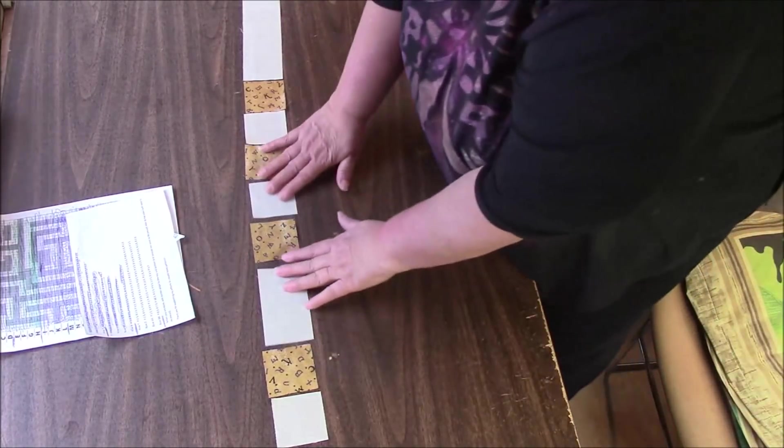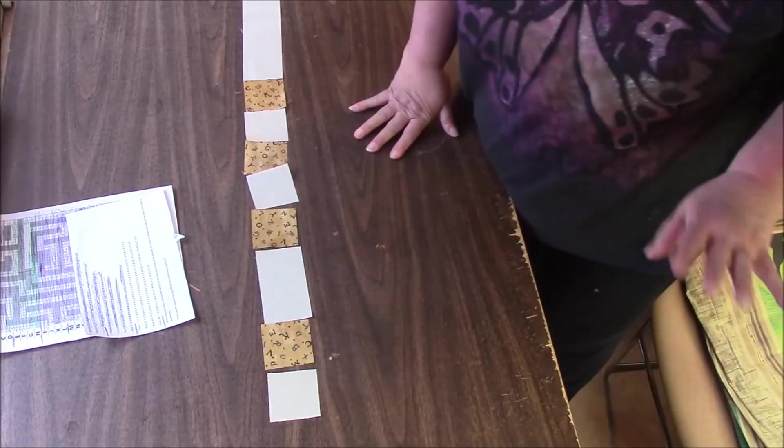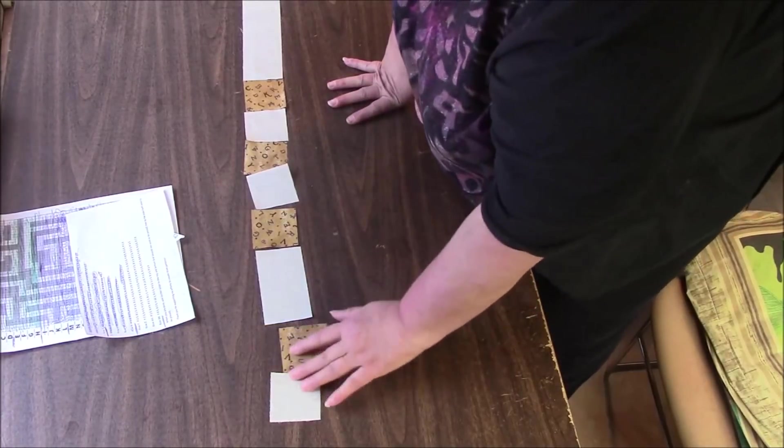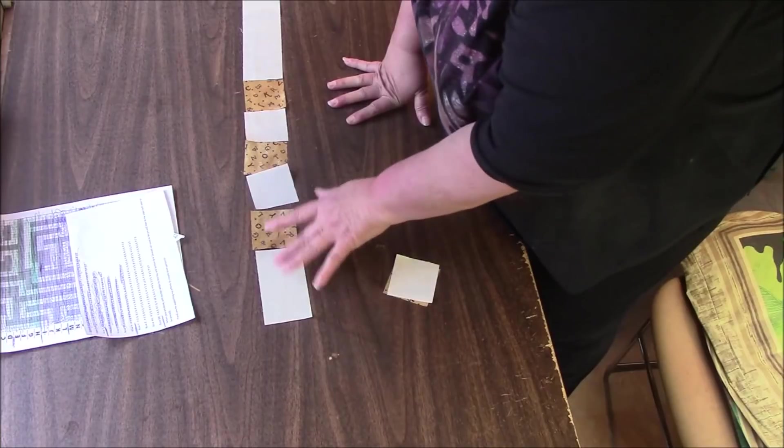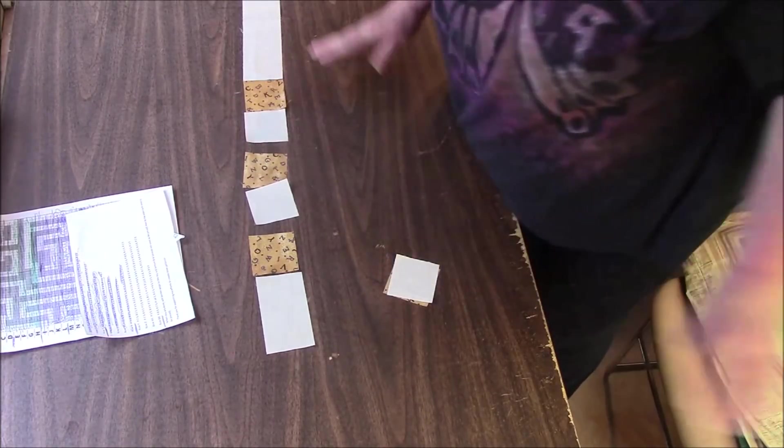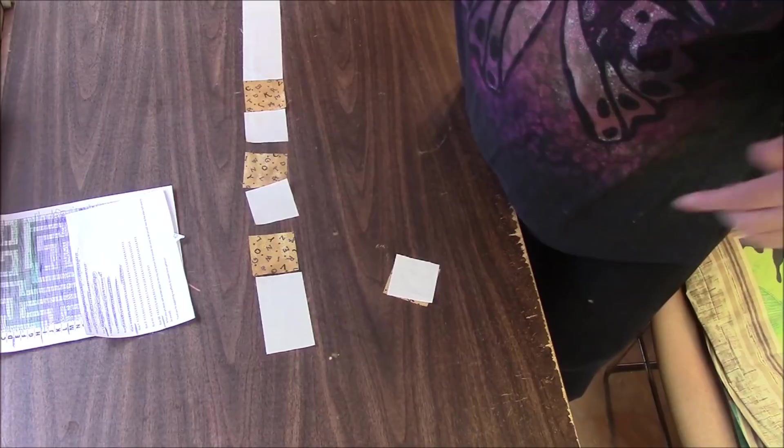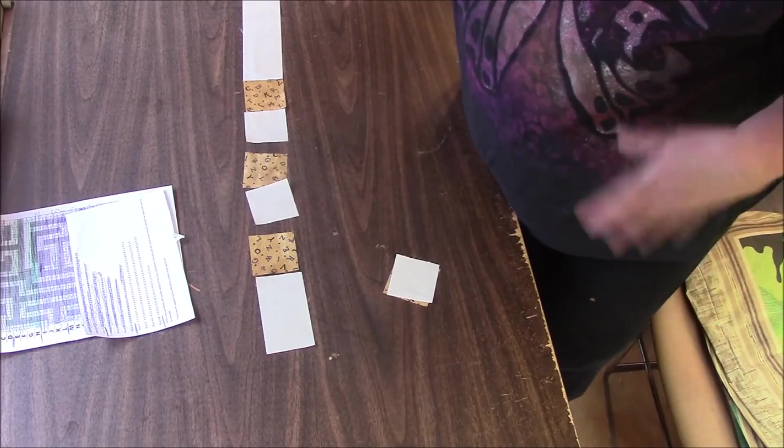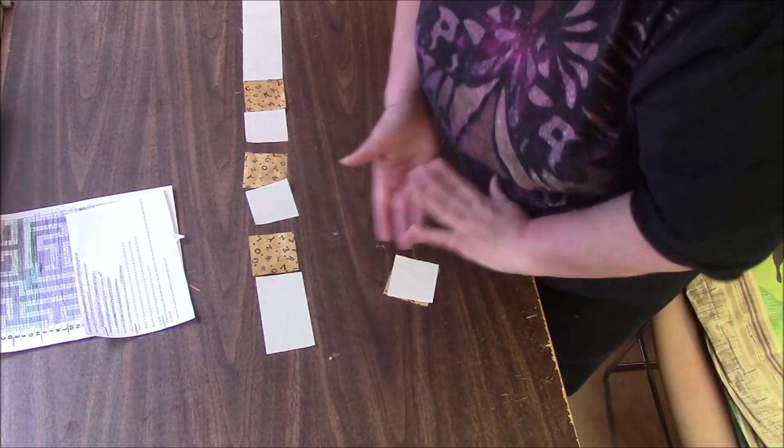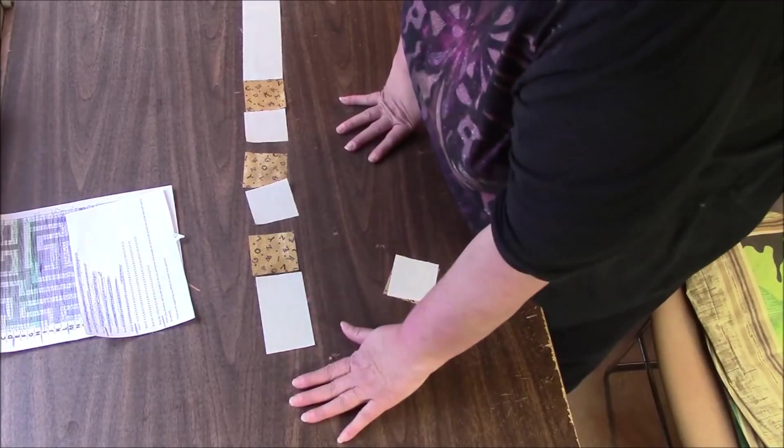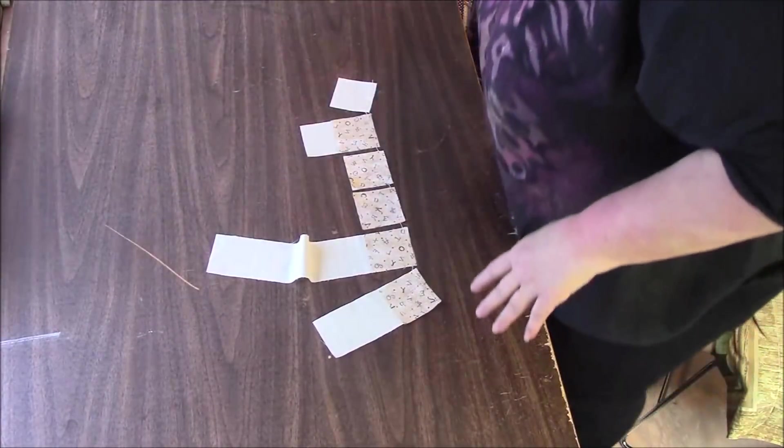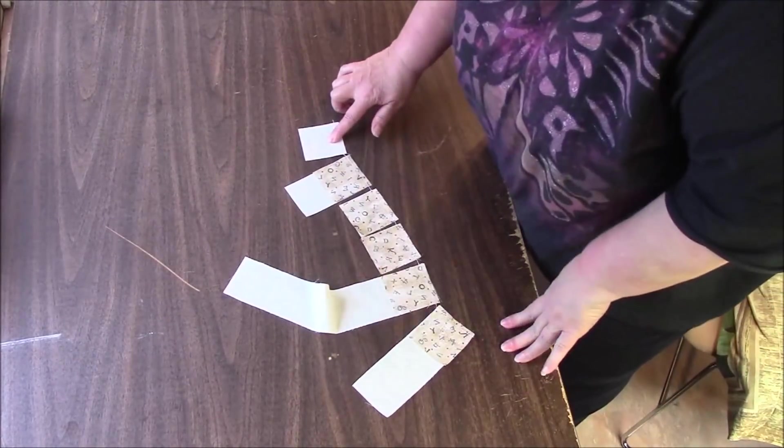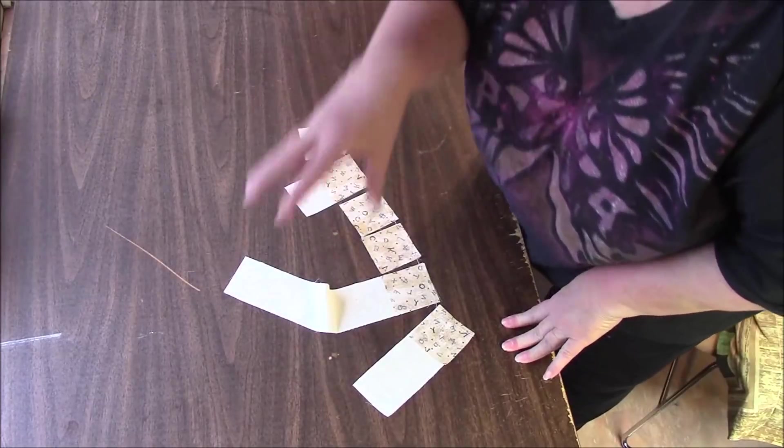So what I'm going to do is, I do chain piecing. I did that the whole time, for every row. I'm going to take these two and send them through. And then these two and send them through. These two, these two, these two. For me, it's the easiest way. If you think you'll get confused doing that, then you can just sew two, finger press them, and put them right back down.